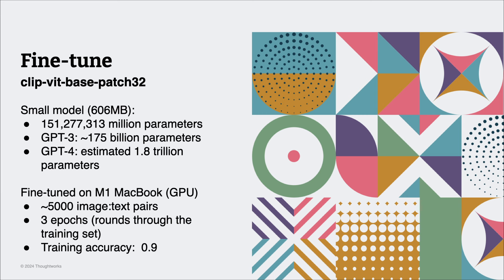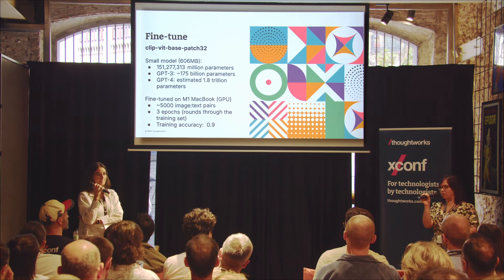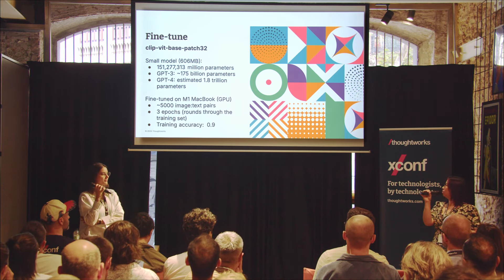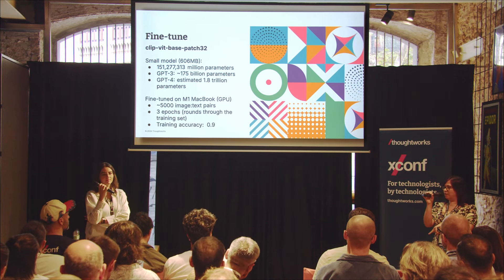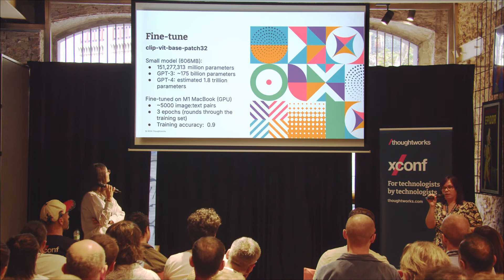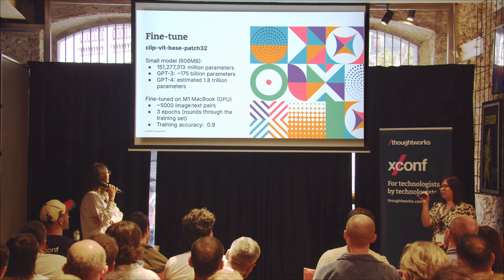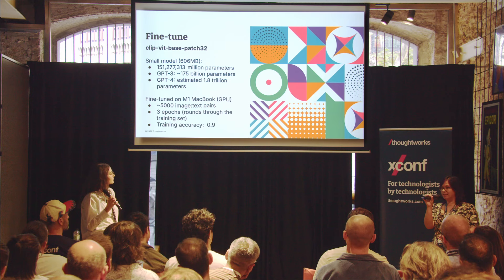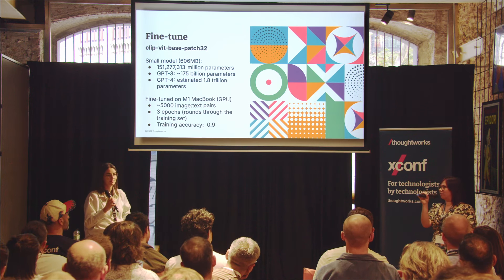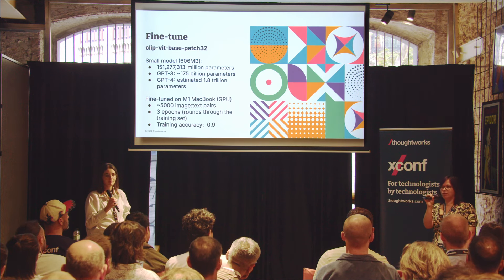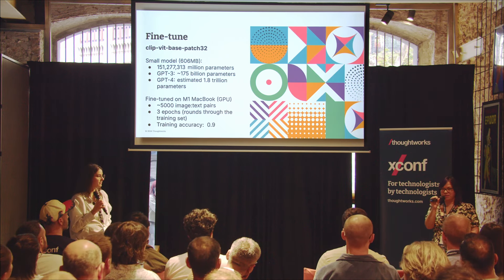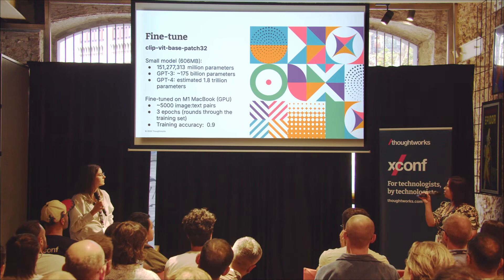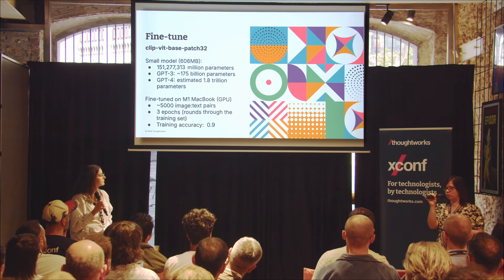Getting into the nitty-gritty of fine-tuning: the CLIP model we were fine-tuning is actually a very small model, with just over 151 million parameters. For scale, GPT-3 has about 175 billion, GPT-4 is estimated at 1.8 trillion, and GPT-4 mini — which we used to label the dataset in this example — is apparently about 8 billion. We were able to fine-tune the CLIP model using roughly 5,000 image-text pairs, with a training and test set, locally on an M1 MacBook. This speaks to the infrastructure cost to fine-tune or deploy this model. As we heard earlier, using fewer resources can also be better for the environment. The results you're going to see used just three epochs of fine-tuning — three rounds through the training data to tweak the parameters.